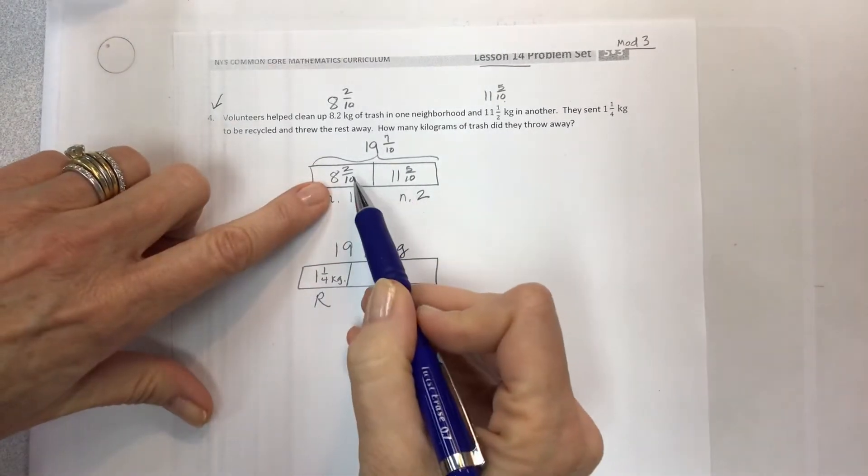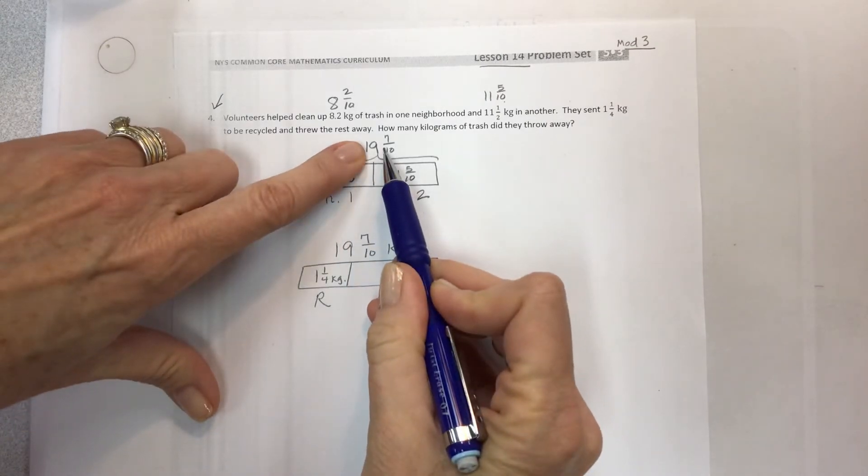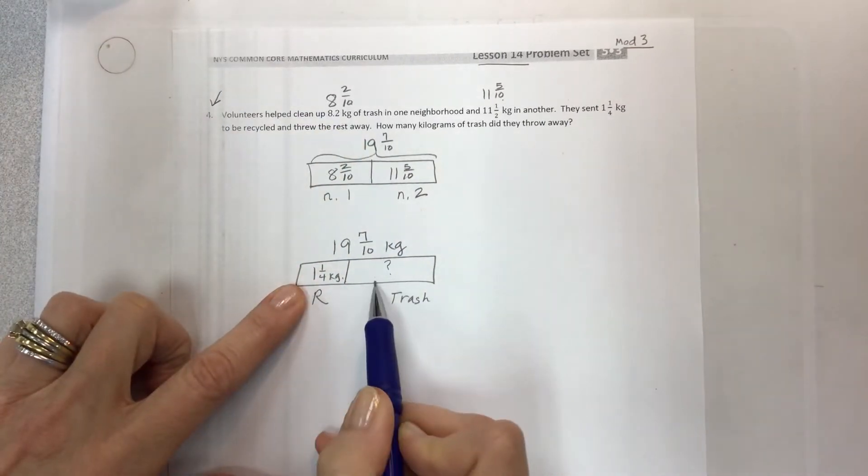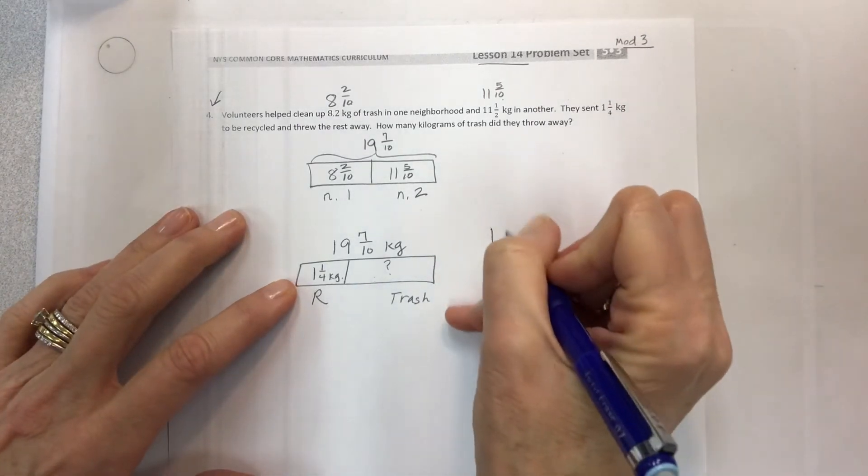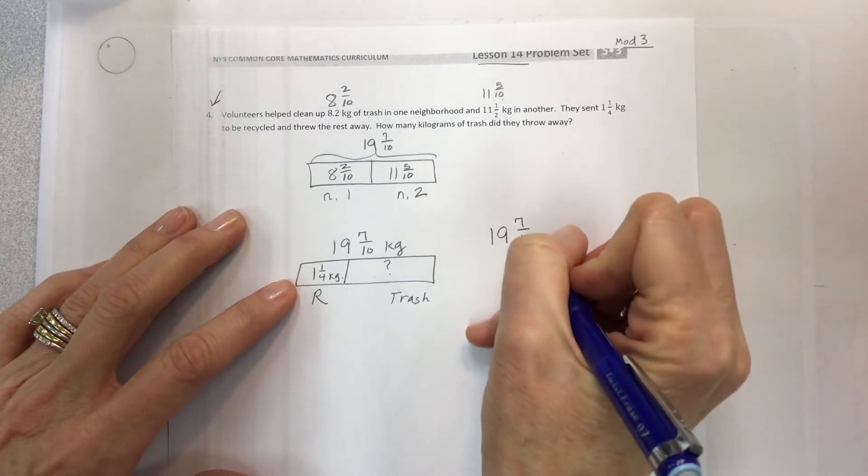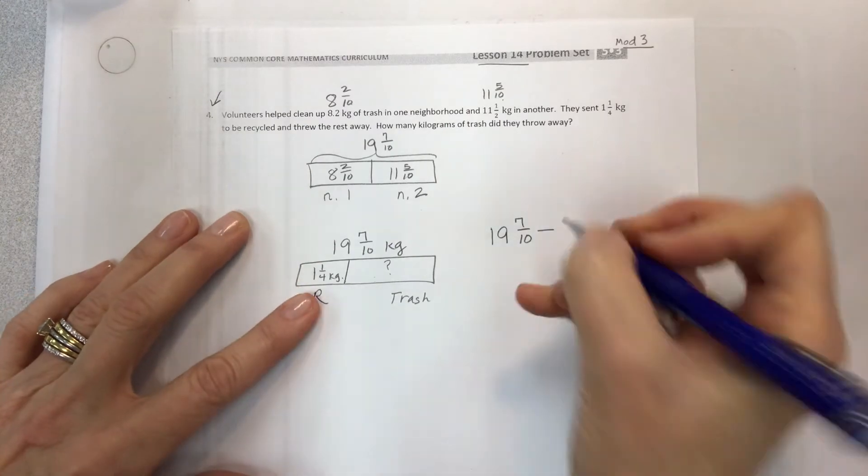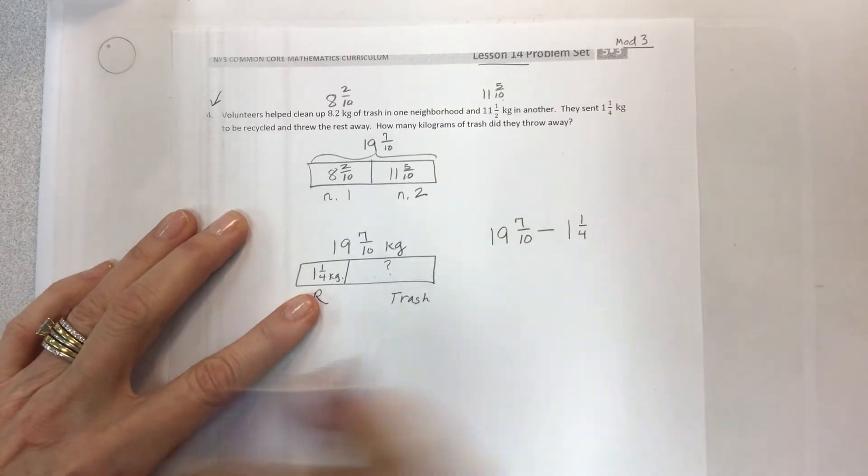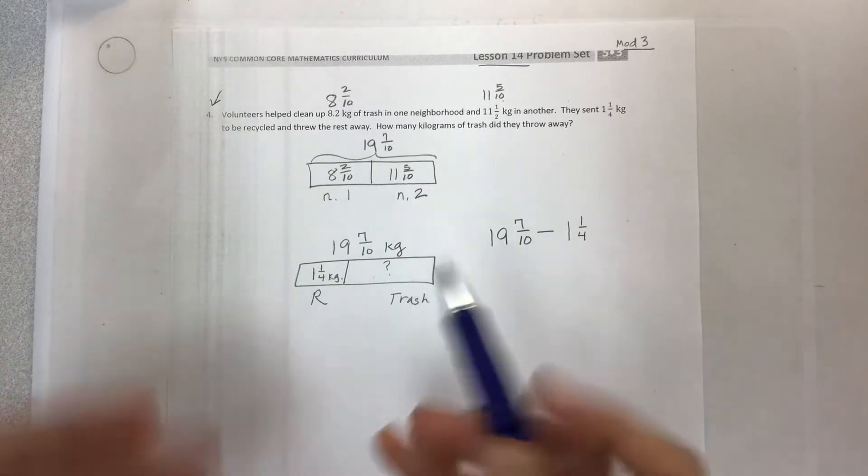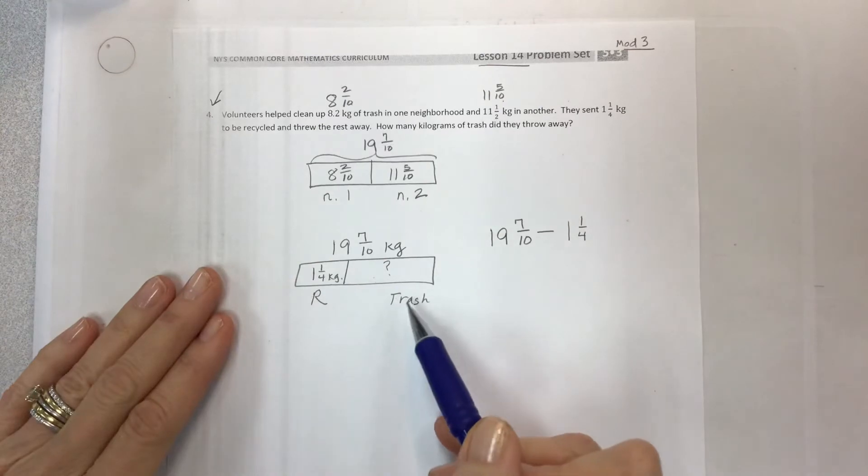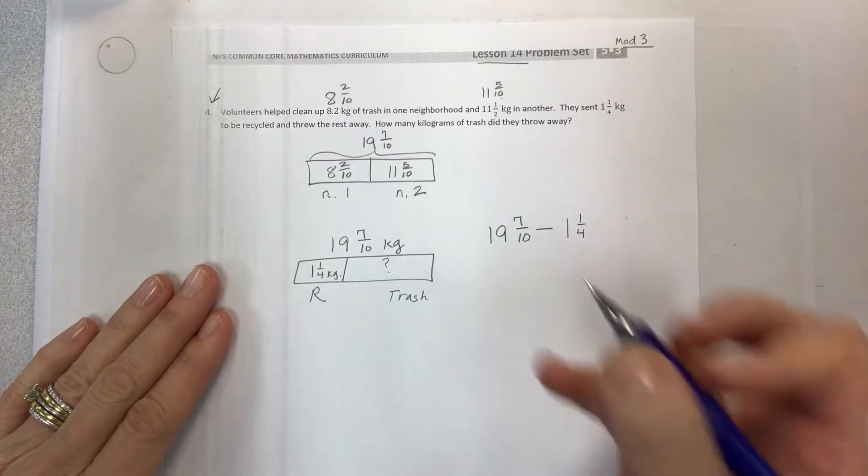Now with this, if this was combined to get the whole, we can't just combine because we don't have this number. But what you do here is you can take your 19 and 7 tenths, take away what you do know, which is 1 and 1 fourth, and then find out the amount of trash, the stuff that was collected that has to just be thrown in the trash and cannot be recycled.